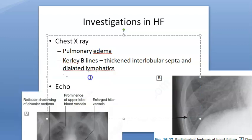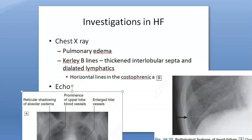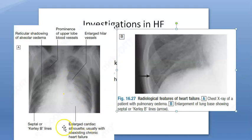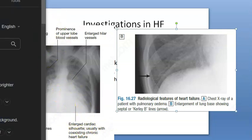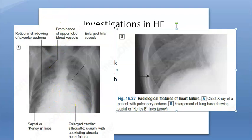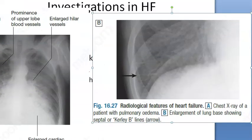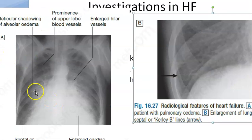Curly B lines appear as horizontal lines in the costophrenic angle. In the first image, they are showing an enlarged cardiac silhouette, usually with coexisting chronic cardiac failure. A silhouette is the dark shape or outline of something visible in restricted light. You can also see alveolar edema in the image.